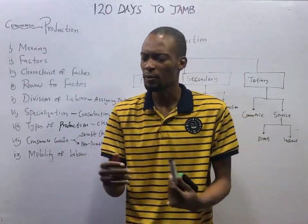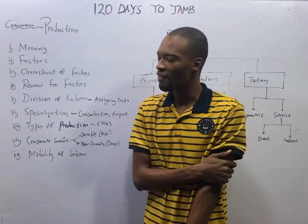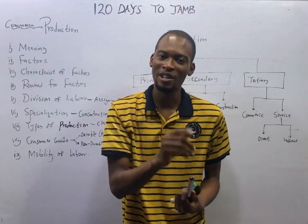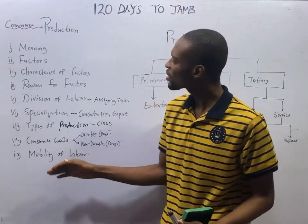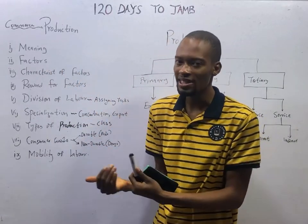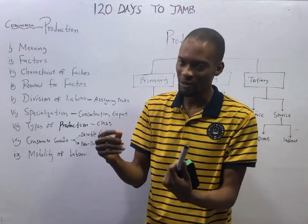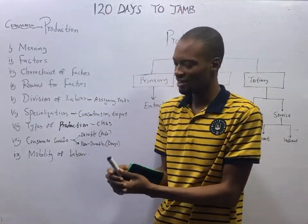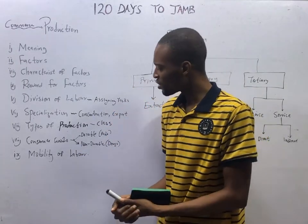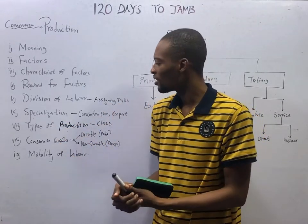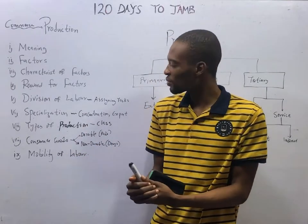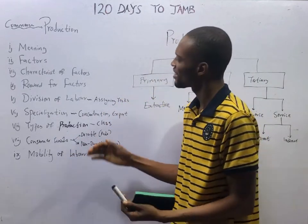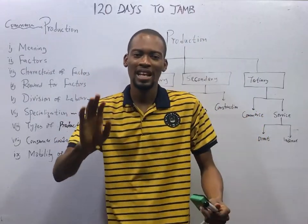These are the outlines for production. In this episode, we shall look at the meaning of production and the importance of production, then solve one question. In another episode, we'll look at the factors of production, their characteristics and reward. In another, division of labor and specialization — similarities, differences, and a question. Then types of production, consumer goods, and mobility of labor, each with a question. After that, episodes dedicated to questions and answers under production.